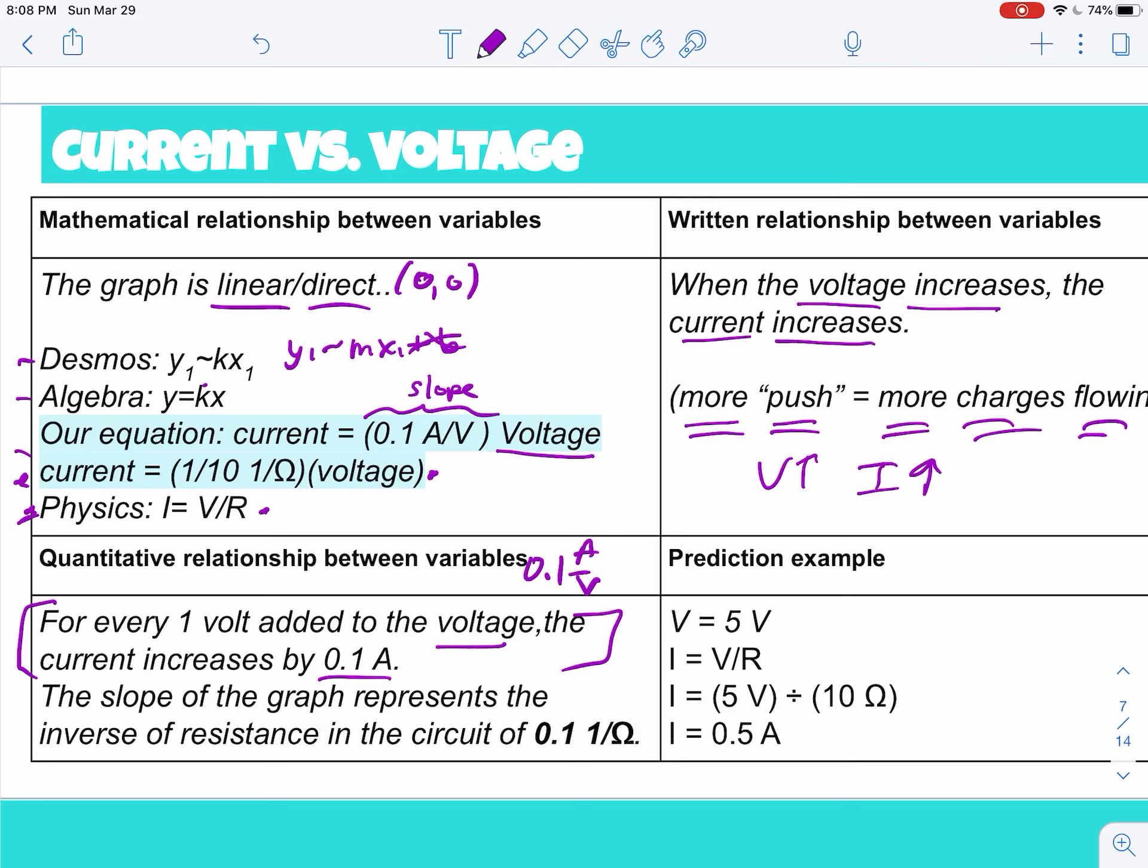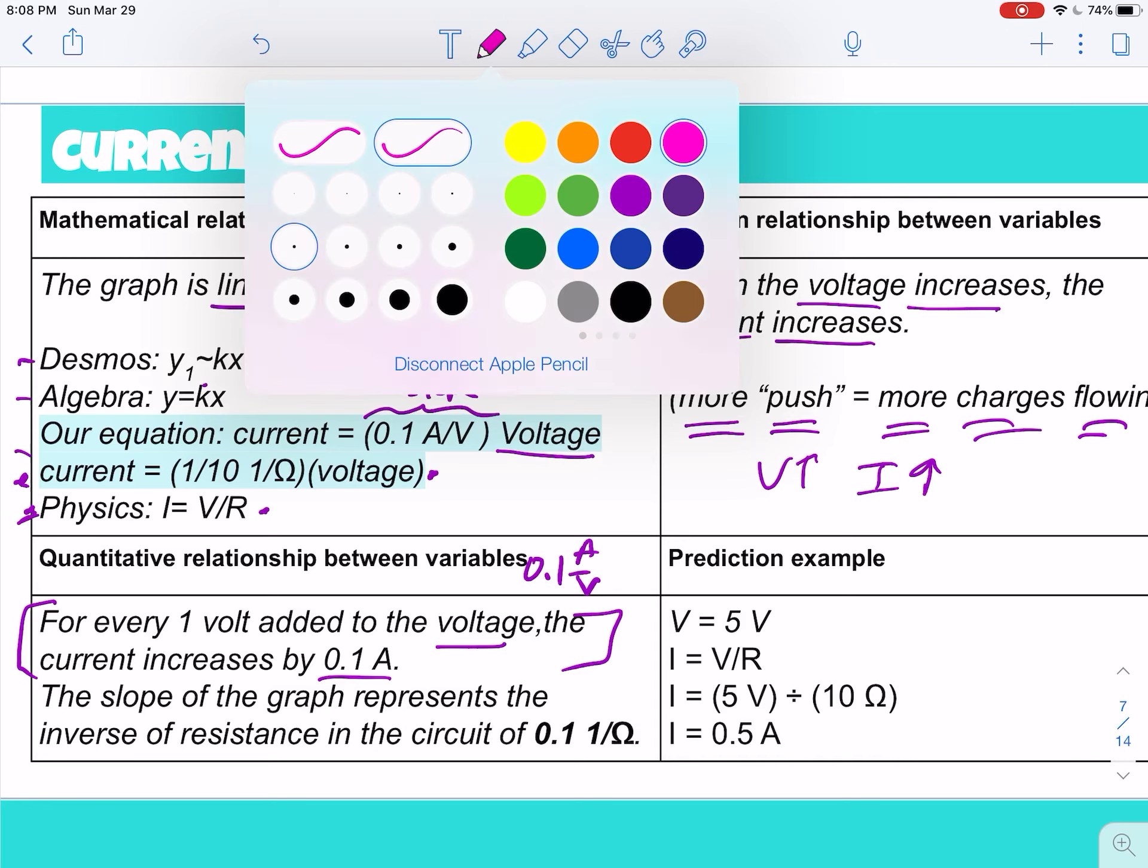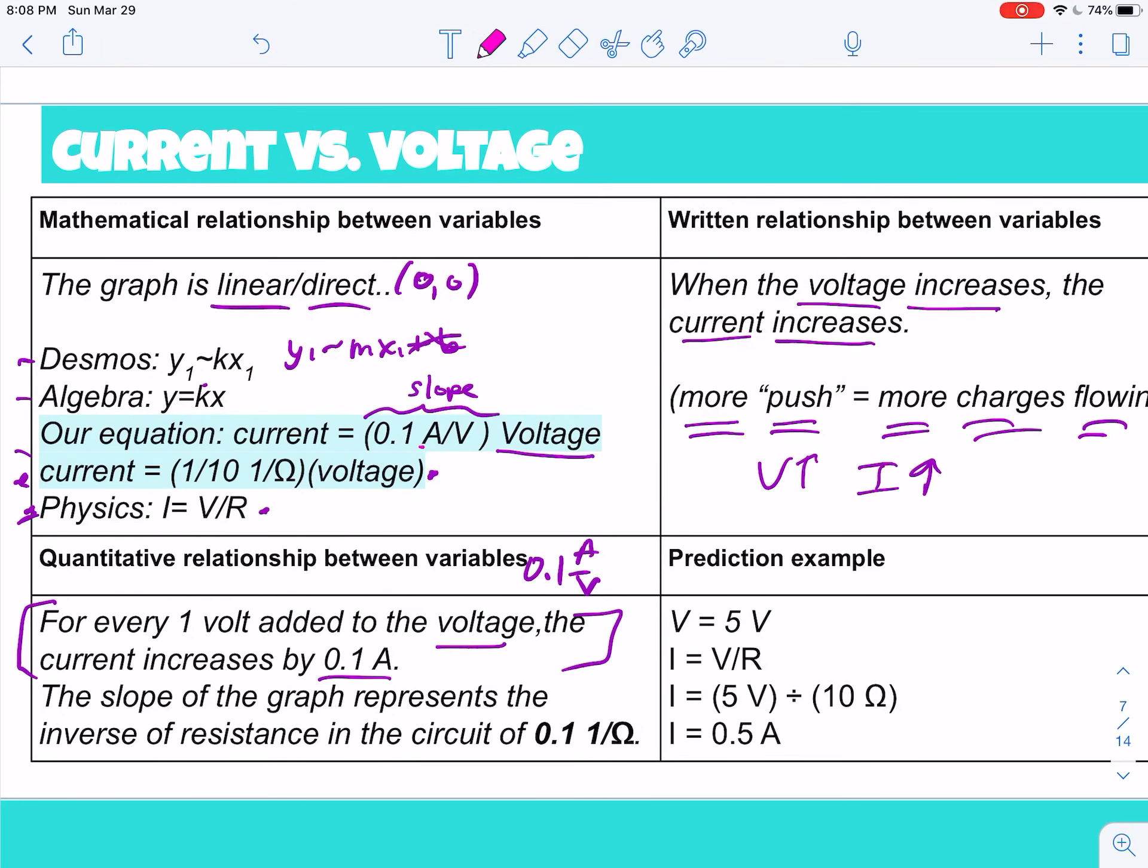You're just gonna have to believe me, okay? 0.1 is the same as 1 10th, right? So really what this slope is telling you is one over the resistance, right? Because it was one over 10 ohms. See, that's where your 10 was, okay? So really when we look at this, this slope here is actually the inverse of resistance, okay? Which gives us the equation, current equals voltage over resistance.